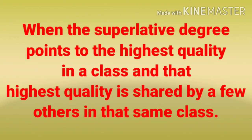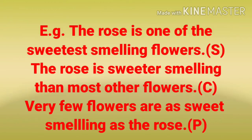Rule number two: when the superlative degree points to the highest quality in the class and that highest quality is shared by a few others in that same class. Example: 'The rose is one of the sweetest smelling flowers.' It is a superlative degree. The format of superlative degree here is: one of the + adjective + est, or one of the + most + adjective. As per the format, this first sentence is in superlative degree.